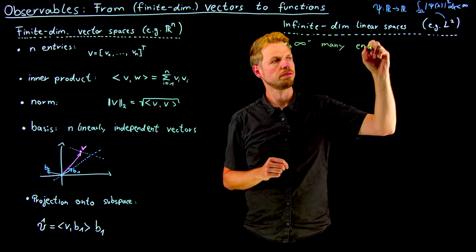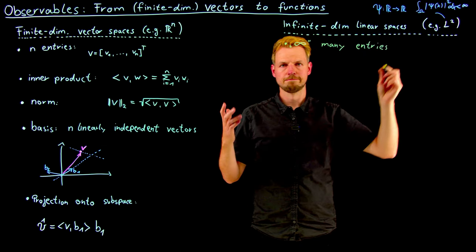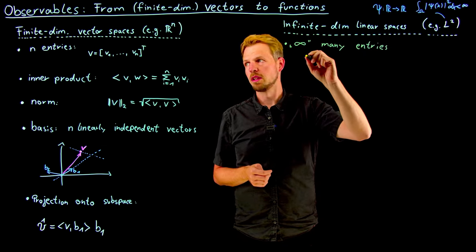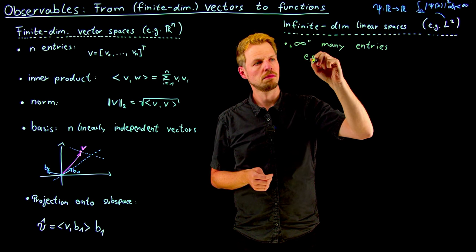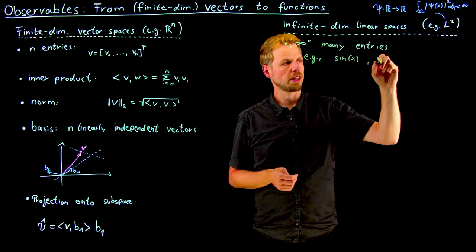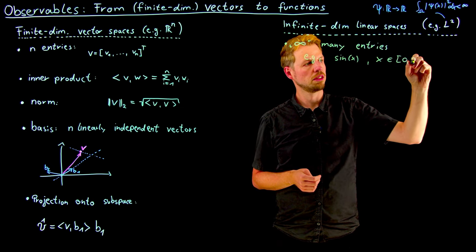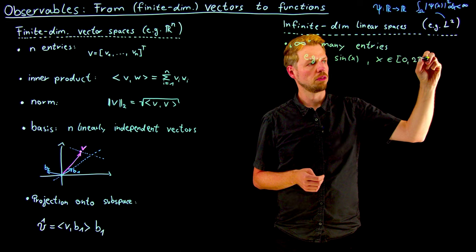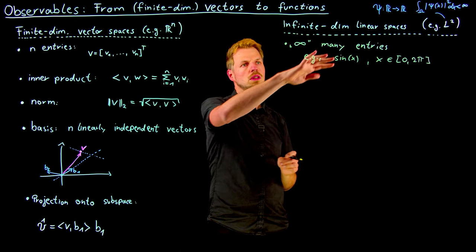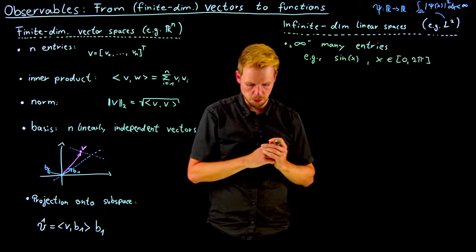Now we have a one-to-one relation. Here we had n entries, and here we have infinitely many entries because we have a function like sine of x, 4x in 0 to pi. Whereas here we have n entries, here we can define this at infinitely many points in space.